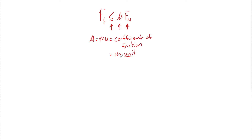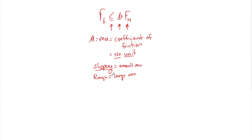What mu really is, is how two surfaces interact. If we use the word slippery — like ice on ice is really slippery — but I can't put slippery into a formula, so we use mu, and this would be a small mu. If we say something is rough, like a block of wood on sandpaper, this would have a larger mu. So mu is just the interaction between an object and its surface and how they rub together.